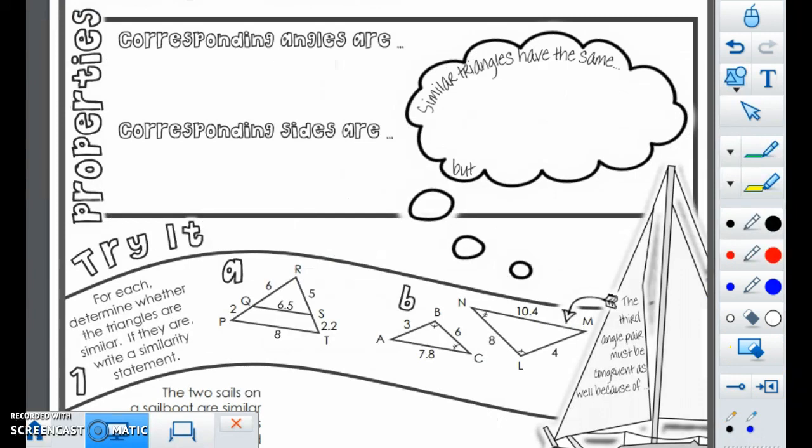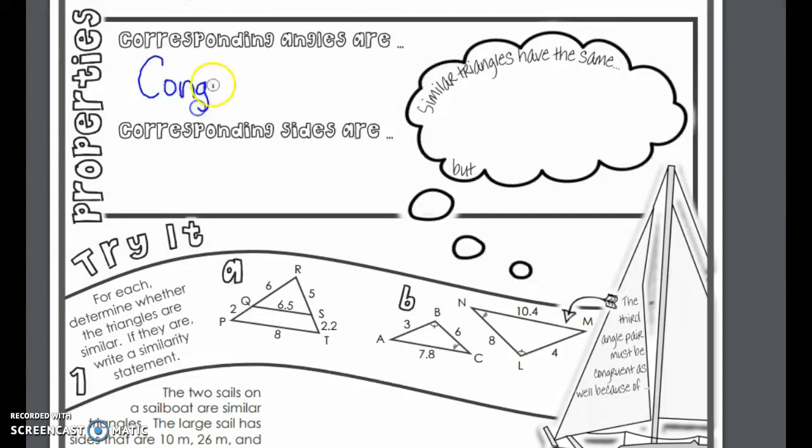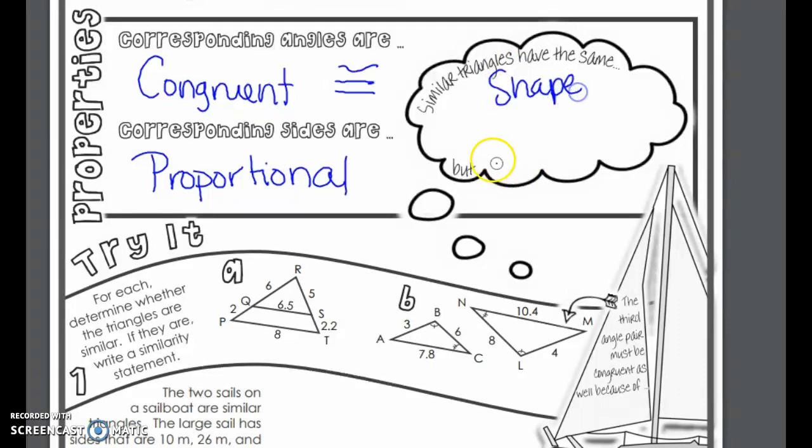Don't forget, corresponding angles of similar triangles are congruent. Let's write the symbol again. It's an equal sign with a similar squiggle on top. My similar squiggle is not too good. Corresponding sides are proportional. When we say proportional, we mean they are in the same ratio.